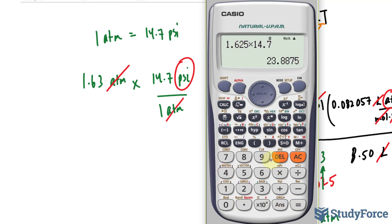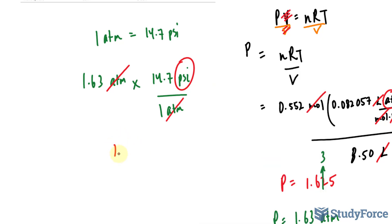I end up with 23.88. 23.88, rounding that to three significant figures, we get 23.9 psi or 1.63 atm.